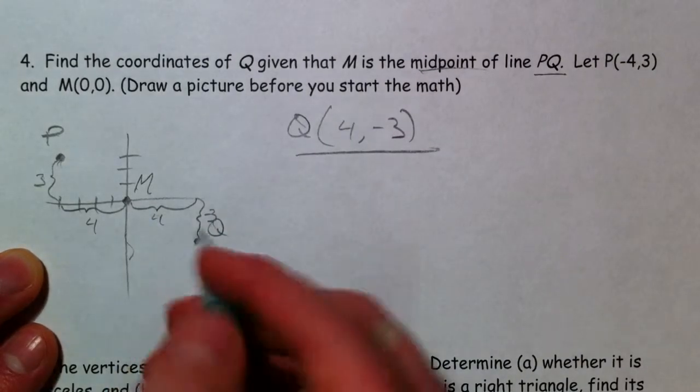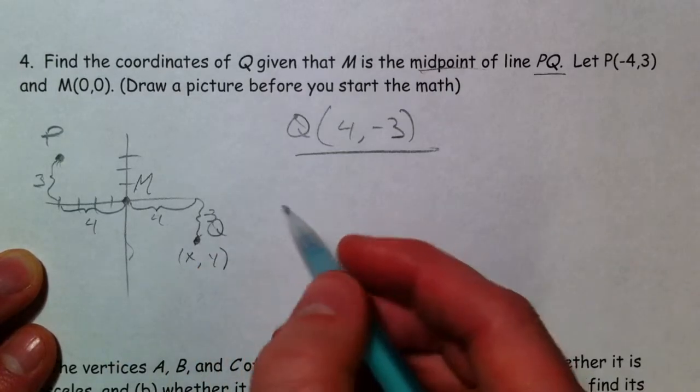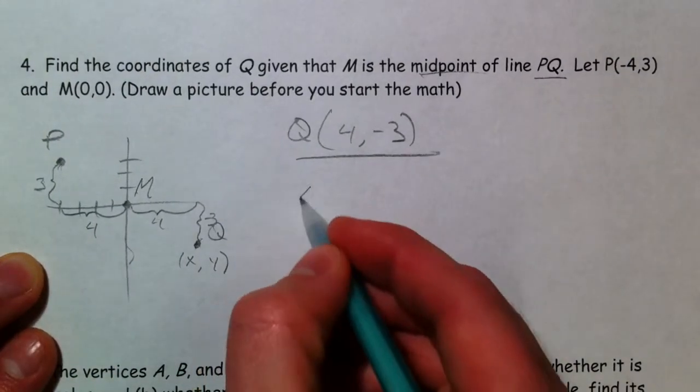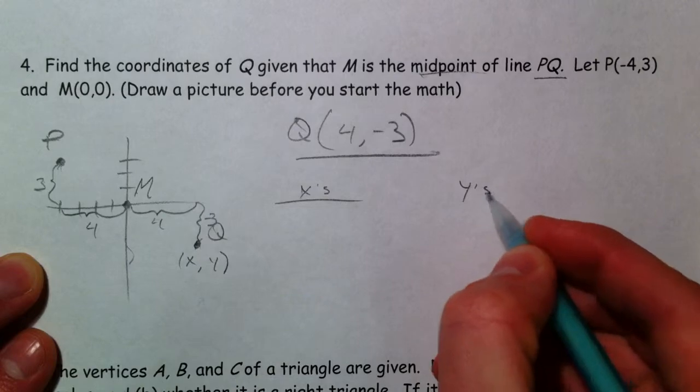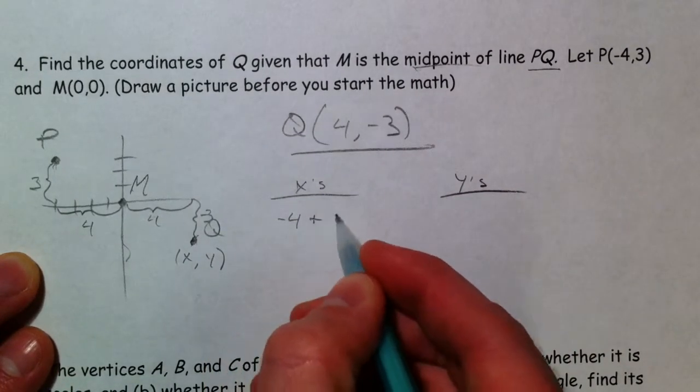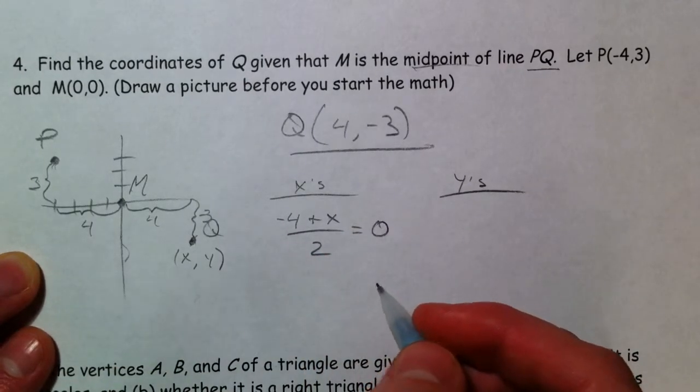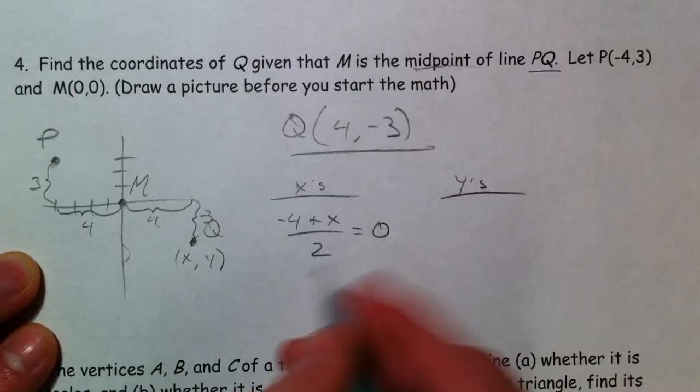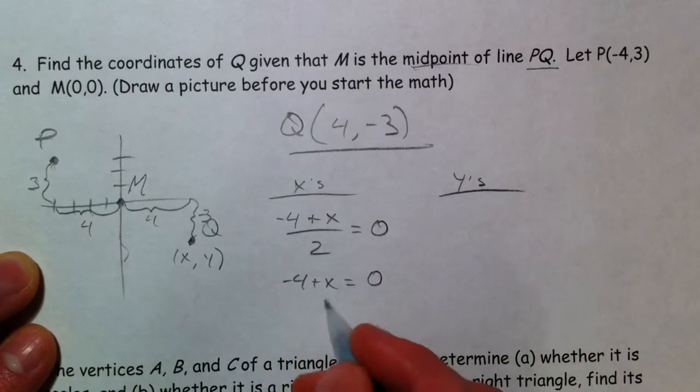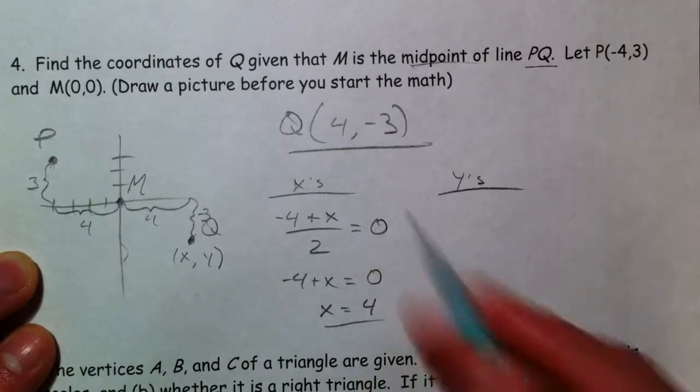Another way you could do it is say there's some point, call it (x, y). I could use the midpoint formula for the x's and for the y's. I could do negative 4 plus some x that I don't know, divided by 2, equals 0. Multiply by 2, negative 4 plus x. Multiply both sides by 2 and you get 0. Add 4 to the other side, x equals 4.